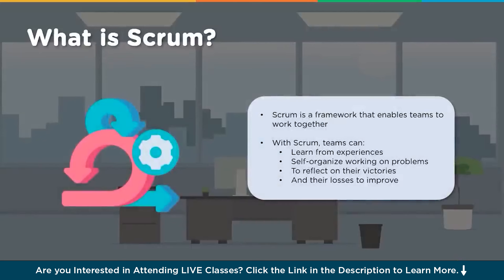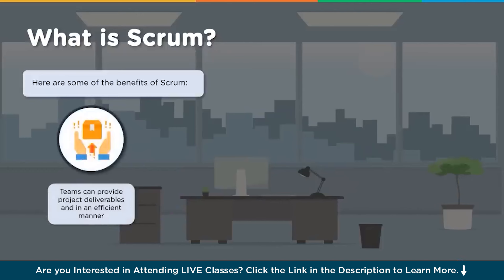Scrum is a framework that enables teams to work together - collaboration is very important. With a scrum team, one can learn from experiences, self-organize to work on problems, discuss, brainstorm, reflect on victories, celebrate achievements and quick wins, and make corrections for losses. Some benefits of using scrum: the team can provide project deliverables in an efficient manner, completing all features and functionality in time.